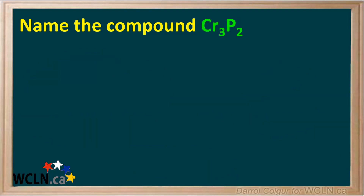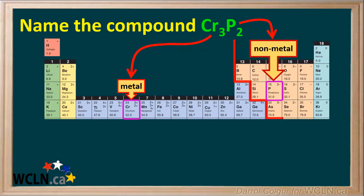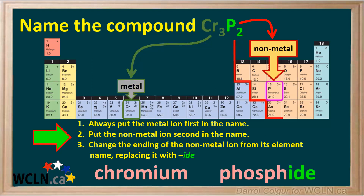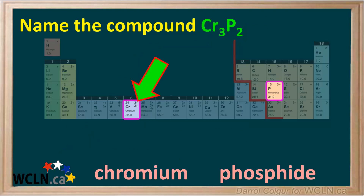Here's one for you to try. Name the compound Cr₃P₂. Pause the video and try this on your own first, then resume the video and check your answer. We look up chromium and phosphorus on the periodic table and we see chromium is a metal and phosphorus is a nonmetal. We can do the first three steps all at once. The name of the metal is chromium and it comes first, and the name of the nonmetal is phosphorus and we change its ending to -ide, so it's phosphide.